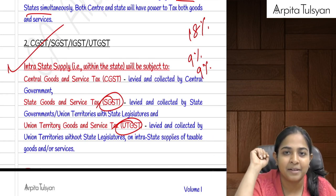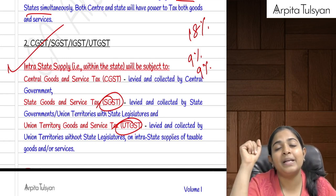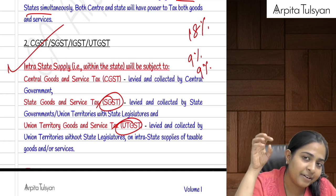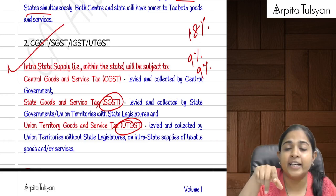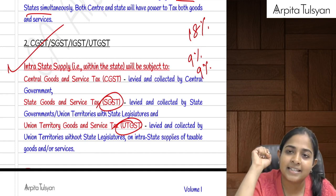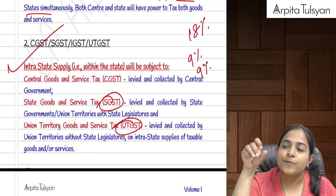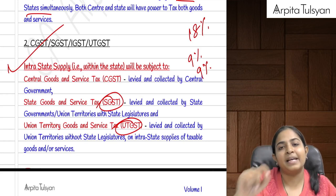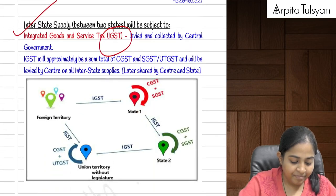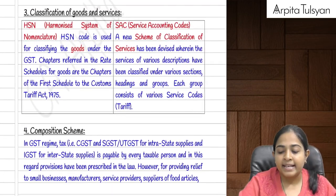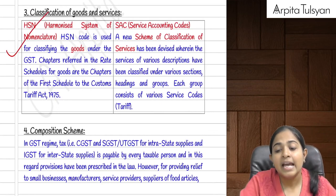For a sale from Delhi to Delhi — Delhi being a union territory with its own state legislature — UTGST will not be applicable, so SGST will be applicable. Therefore the taxes applicable for Delhi to Delhi will be CGST and SGST.